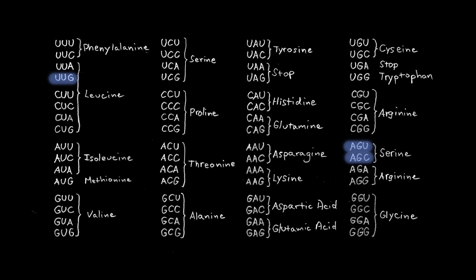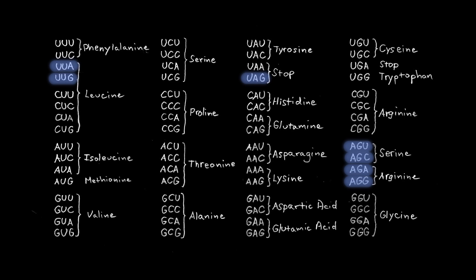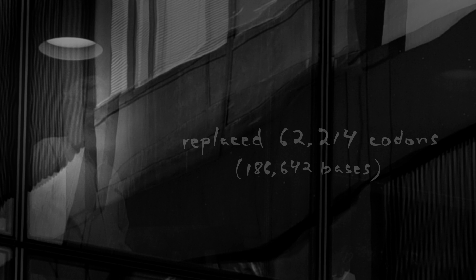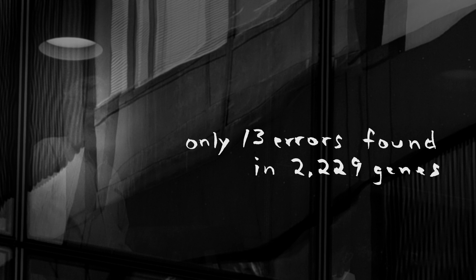We've replaced instances of five other codons too. In all, throughout the entire E. coli genome, we've replaced over 62,000 codon instances, and we've checked two-thirds of all recoded genes and found remarkably few problems.